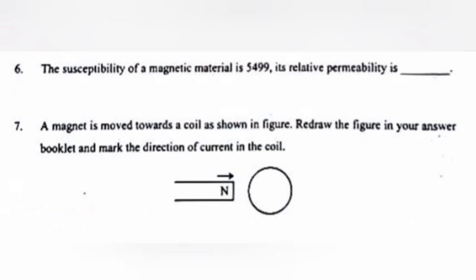Question 7: A magnet is moved towards a coil as shown in the figure. Redraw the figure in your answer booklet and mark the direction of current in the coil. Answer.